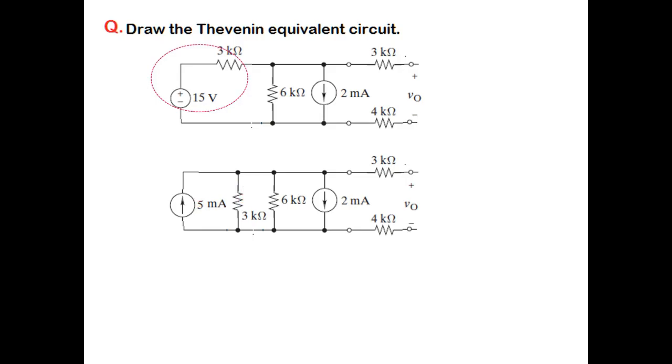The net current will be 5 minus 2, which is 3 amperes going up. So we draw the current source 3 amperes going up, and we also solve 3 and 6 in parallel, which makes 2 kilo in parallel.